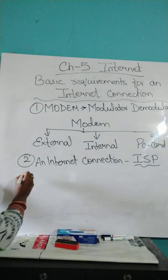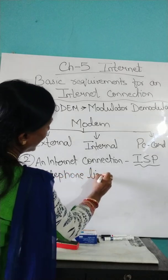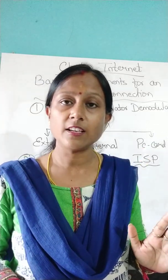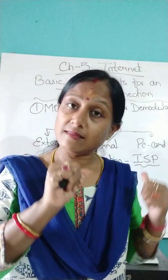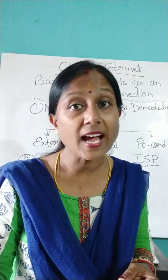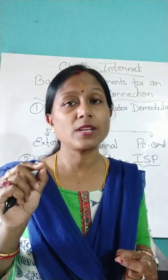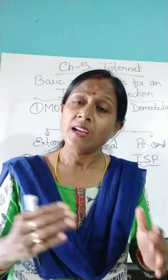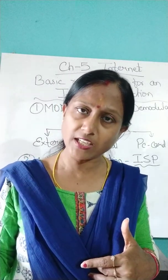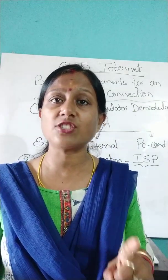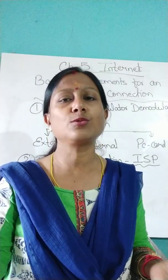The third requirement is the telephone line. It is the medium which helps in data transmission and is connected to the ISP. Without this you cannot get connected to the internet. It may be wired or wireless — the data can be transferred through air as well. So you need a medium through which your data can be transferred from your computer to the service provider.